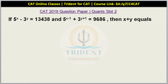Hello everyone, welcome to the session. In this session we are looking at a very interesting question from CAT 2019 quantitative ability section slot 2. The question says if 5 raised to the power x minus 3 raised to the power y equals 13438, and another expression, then x plus y equals what?